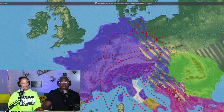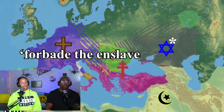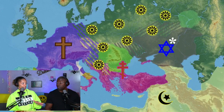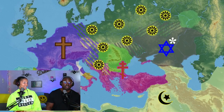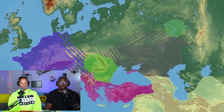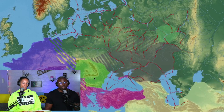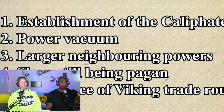Fourth, since all major religions by this point forbade the enslavement of people of the same faith, the still-largely-pagan Slavs proved to be the perfect source of slaves — a detail the hosts find striking, noting that Christianity didn't seem to apply that rule the same way later. Fifth, the emergence of Viking raiding and trading networks in the 9th century opened new trade routes through eastern Europe, through which Slavic slaves could be more easily captured and sold to Byzantium or the Caliphate. Due to all these reasons, the Slavic slave trade exploded in the 9th and 10th centuries.